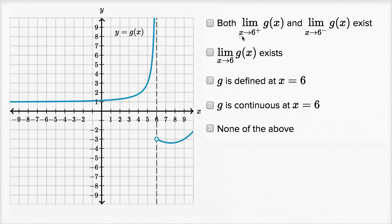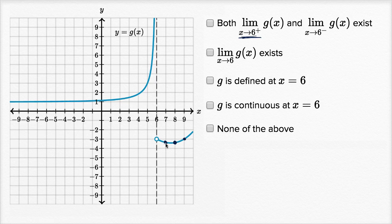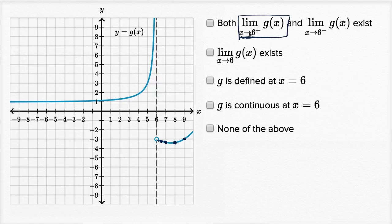Let's first think about the limit of g of x as x approaches six from the right-hand side — as we approach six from values greater than six. When x is equal to nine, g of nine is right over there. g of eight is right over here, g of seven is right over here — it looks like it's between negative three and negative four. g of six point five is still between negative three and negative four but closer to negative three. g of six point one is even closer to negative three. g of six point zero one is even closer to negative three. So it looks like the limit from the right-hand side does exist.